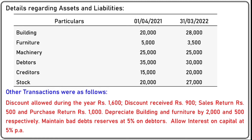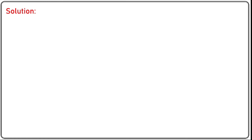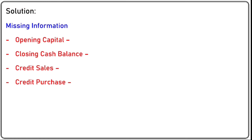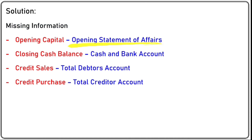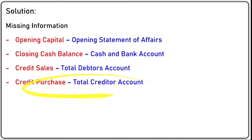Let's understand the solution. First, we identify the missing information: opening capital is missing, closing cash balance is missing, credit sales and credit purchase are missing — four items are missing. Opening capital can be found with the help of the opening statement of affairs. Closing cash balance can be found by preparing cash and bank account. Credit sales can be found with total debtors account, and credit purchase with total creditors account.